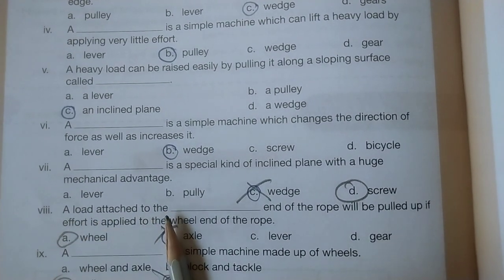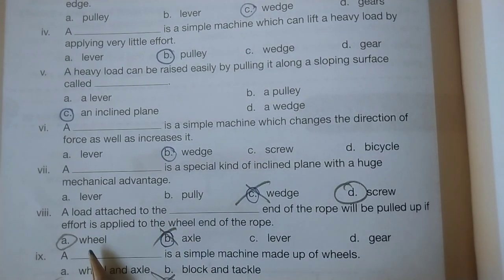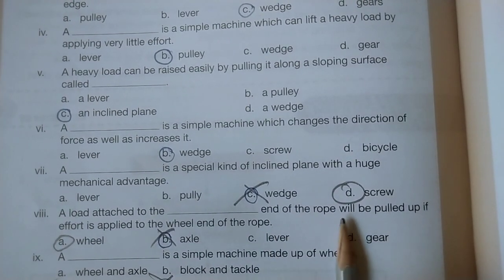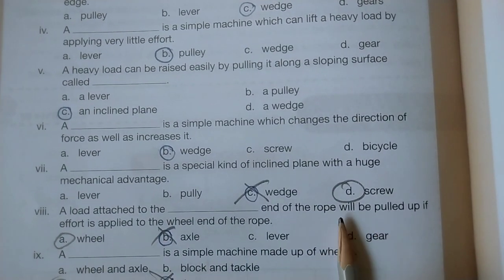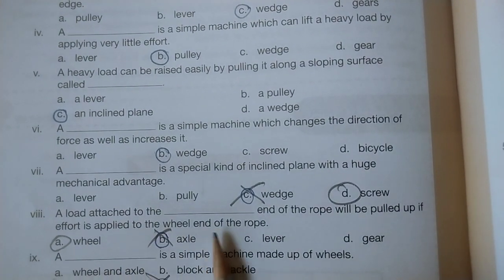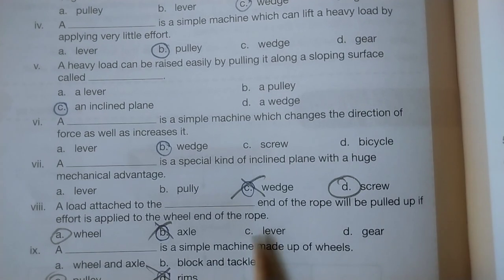Question 8: A load attached to the wheel end of the rope will be pulled up if effort is applied to the wheel end of the rope.